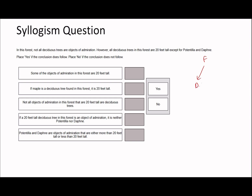Next question: 'In this forest, not all deciduous trees are objects of admiration. All deciduous trees in this forest are 20 feet tall.' With this one we know 'not all of them' applies. It says all the deciduous trees are 20 feet tall except for those two — it could be there are only three trees and therefore only one that's 20 feet tall. Alternatively, the objects of admiration could be both potentilla and daphne, neither of which are 20 feet tall. There's not enough information, so this one is no.